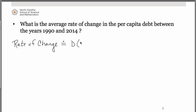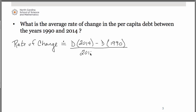We need to calculate the debt in 2014 minus the debt in the year 1990 — that's our change in y. Our x values are the years themselves. The denominator is easy; it's the numerator that we'll have to estimate from the graph.